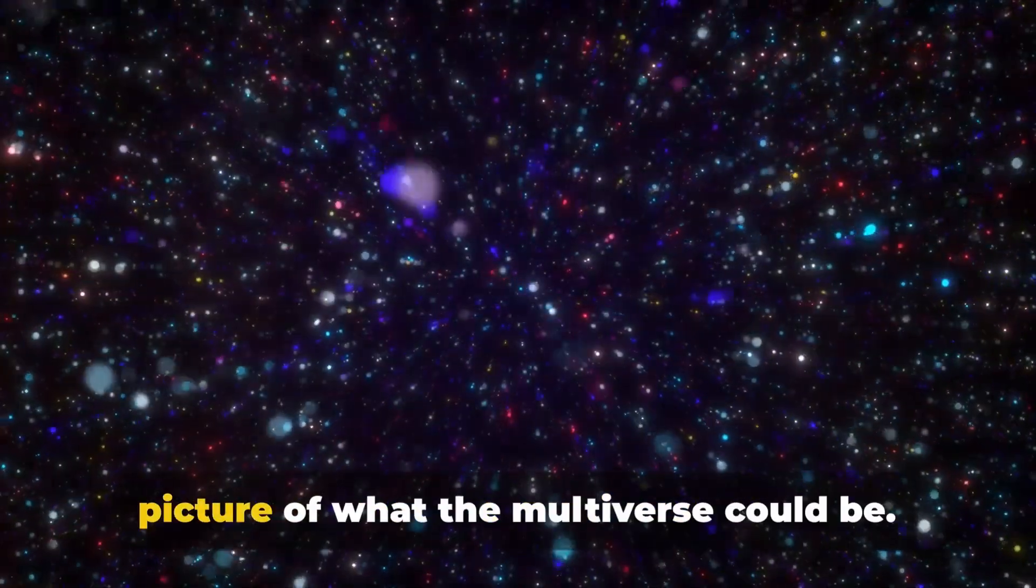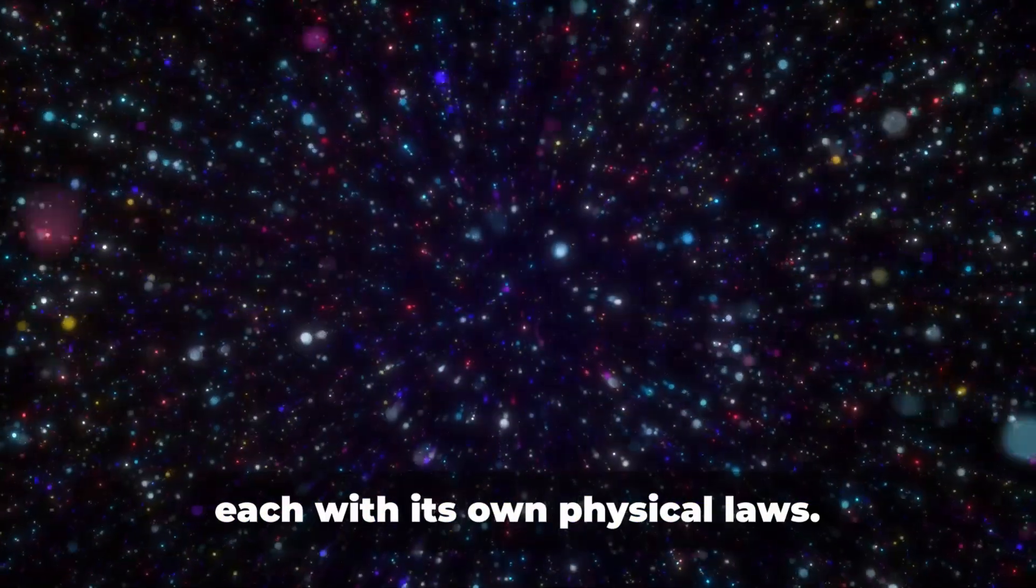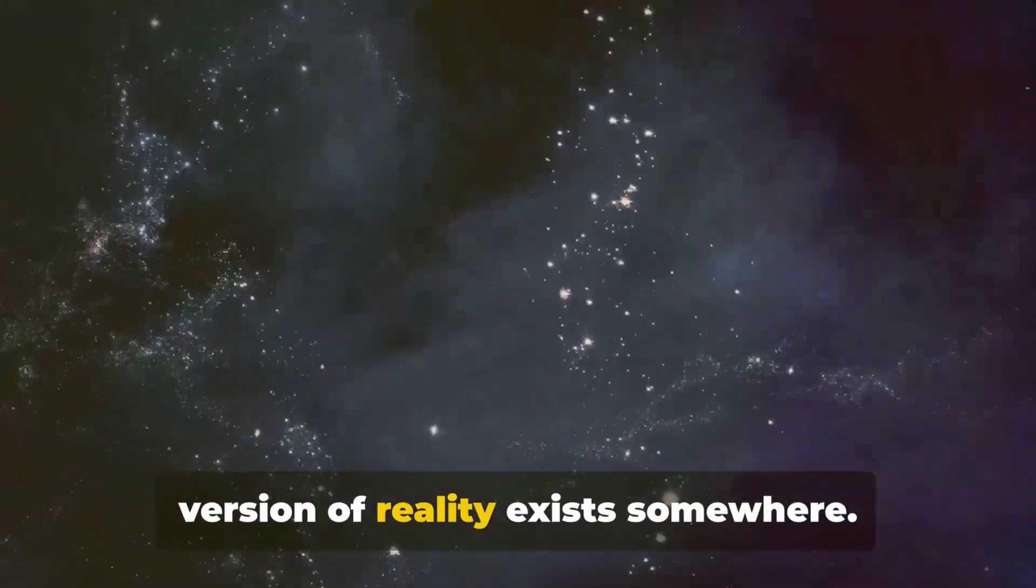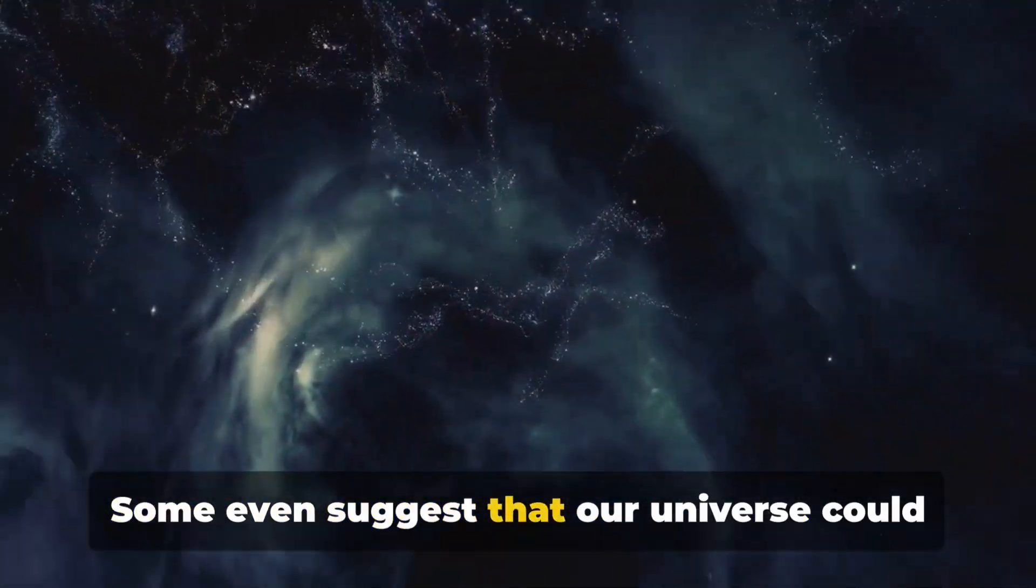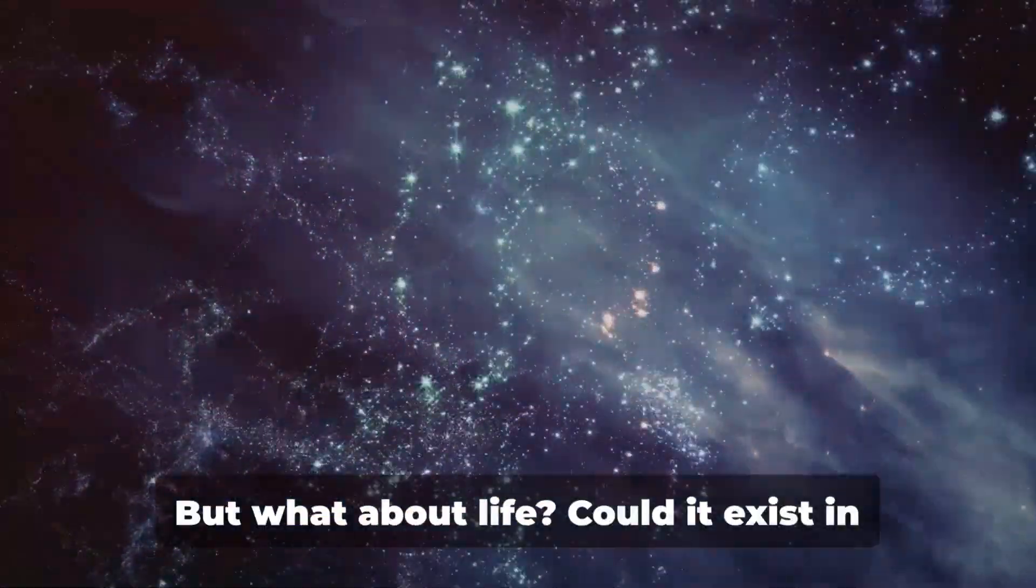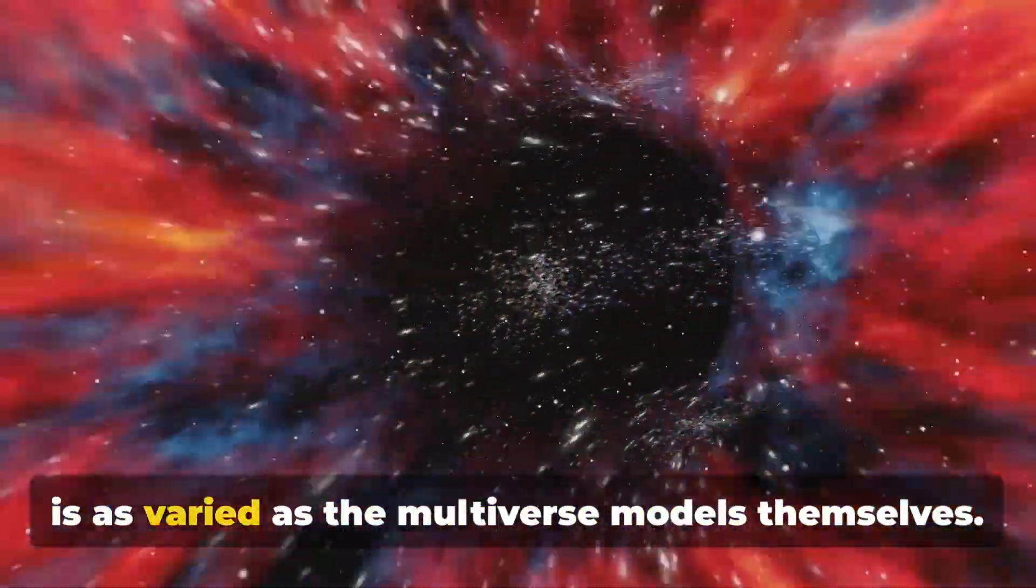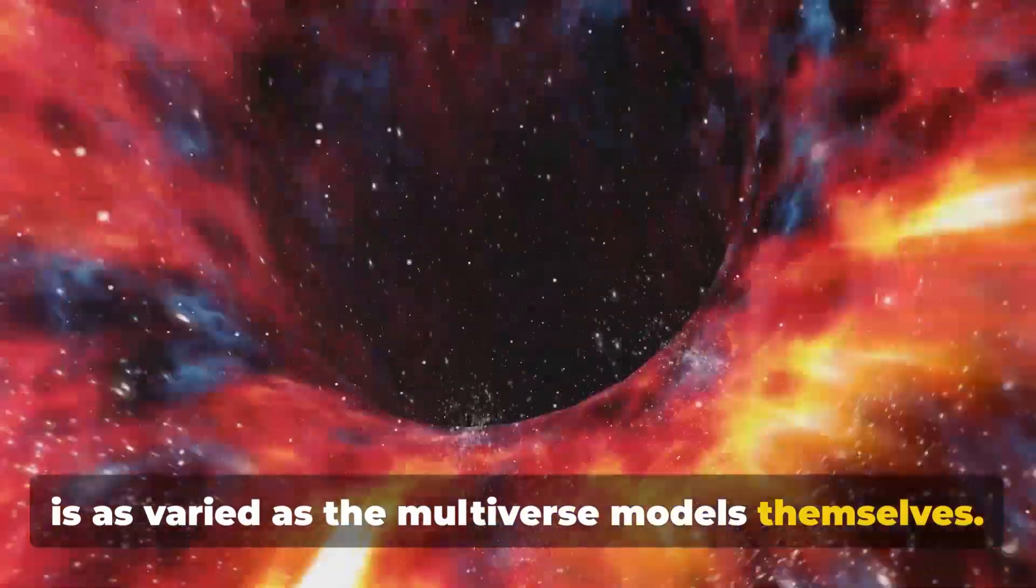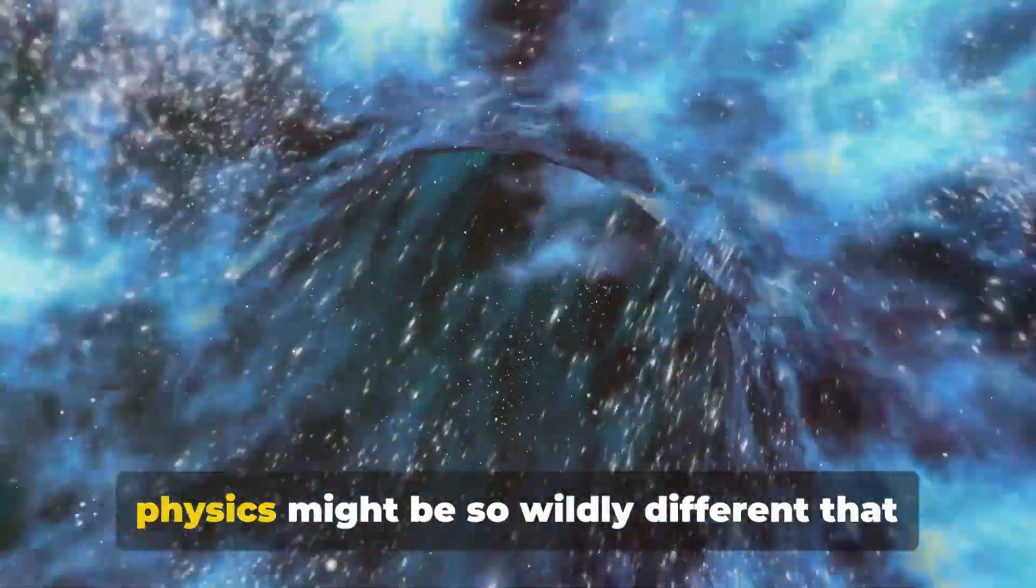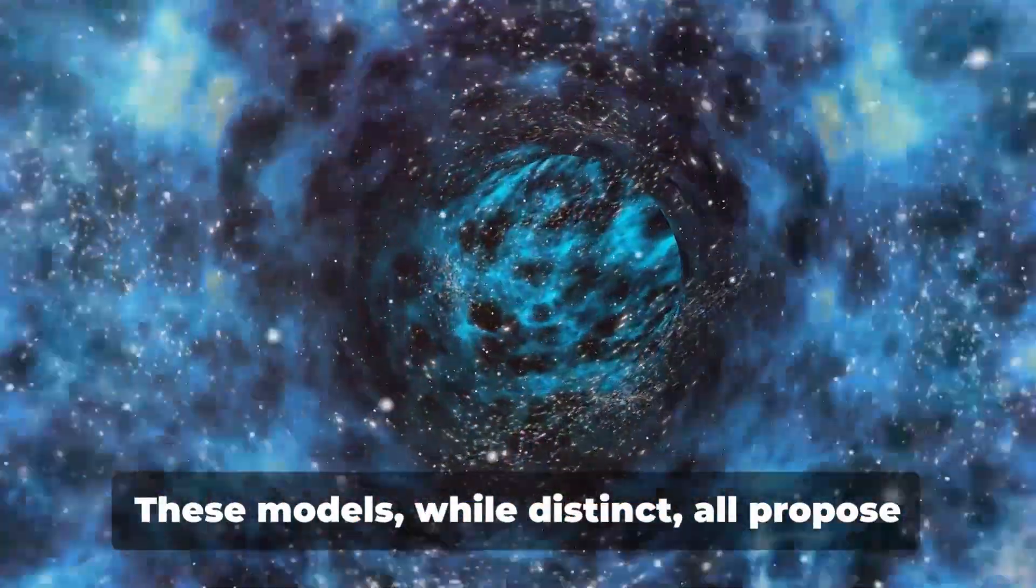Each of these models paints a different picture of what the multiverse could be. Some suggest a multitude of universes, each with its own physical laws. Others propose that every possible version of reality exists somewhere. Some even suggest that our universe could be just one of an infinite number of mathematical possibilities. But what about life? Could it exist in these other universes? The answer to that is as varied as the multiverse models themselves. In some, life as we know it could be possible. In others, the fundamental laws of physics might be so wildly different that life would be unrecognizable or even impossible.